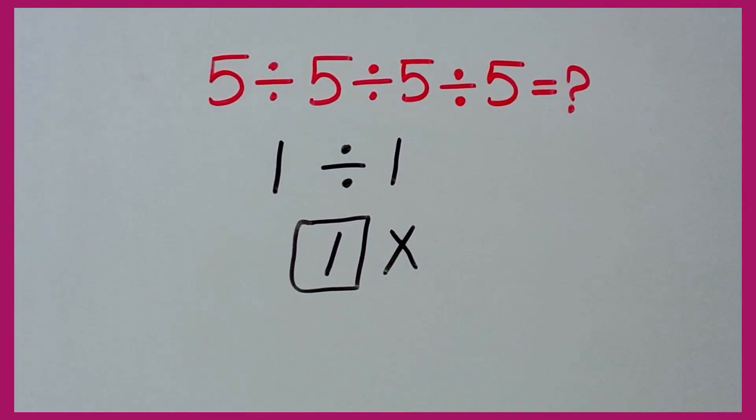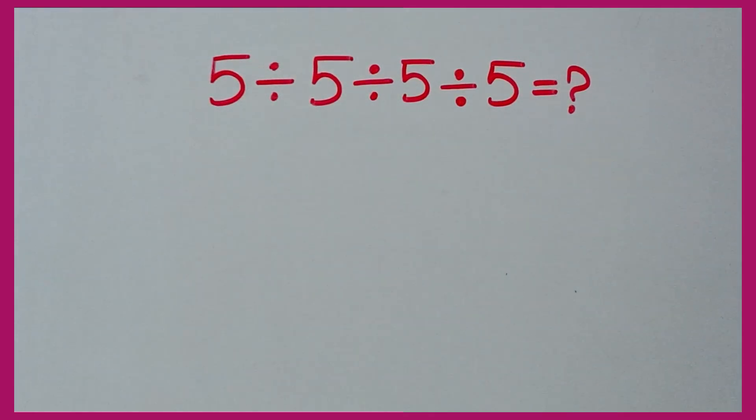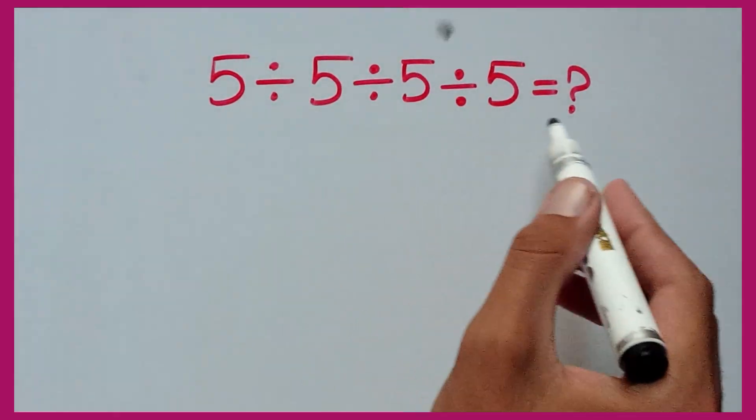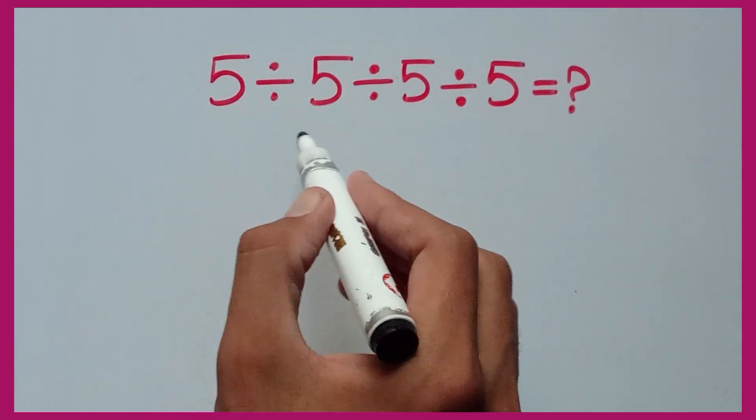Now I'm going to solve this question by the correct method. Whenever in an expression there is more than one division, we solve it from left to right.